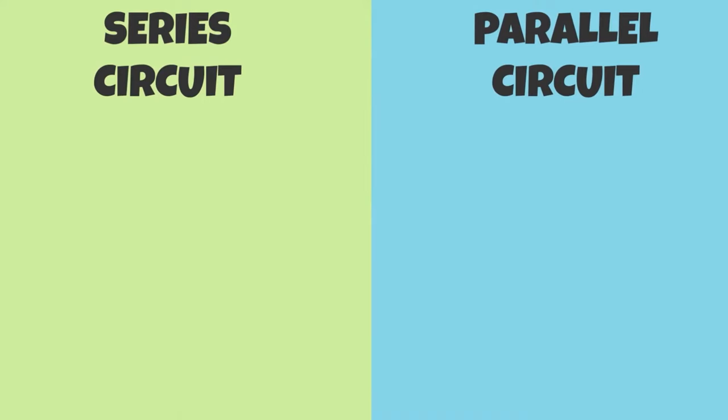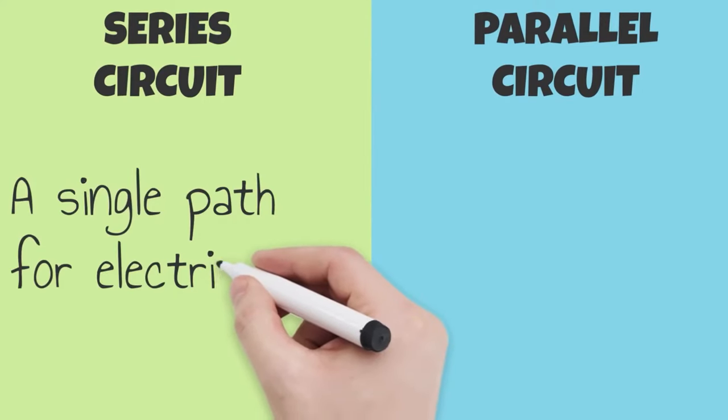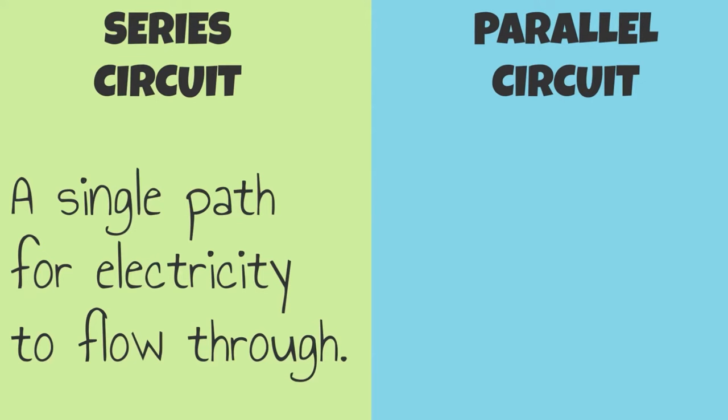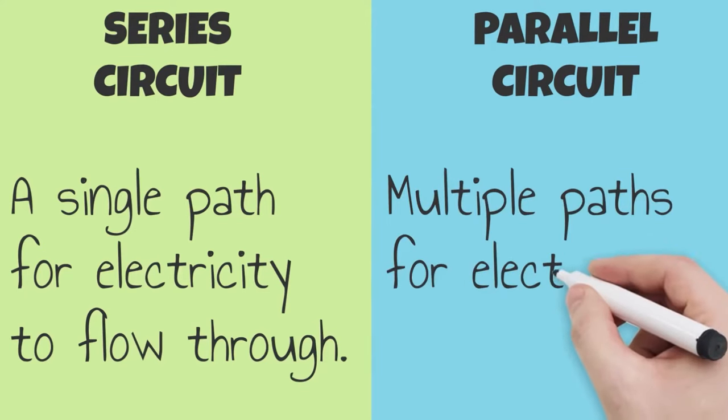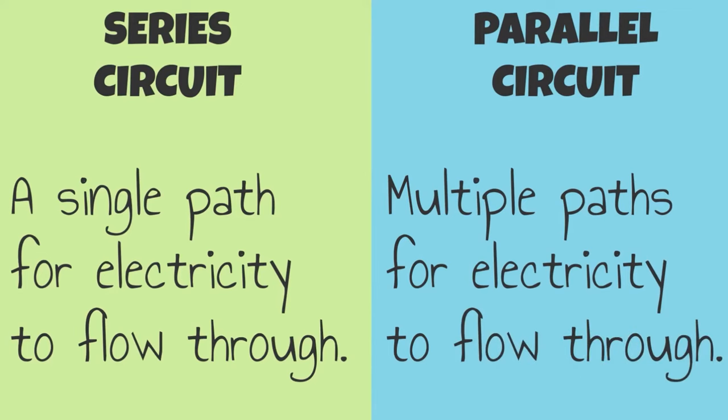There are two types of circuits, series and parallel. Series circuits have a single path for electricity to flow through. Parallel circuits have multiple paths for electricity to flow through.